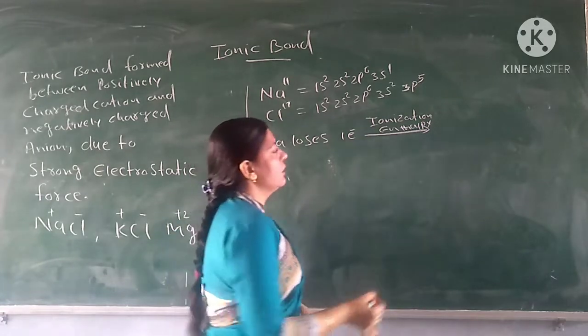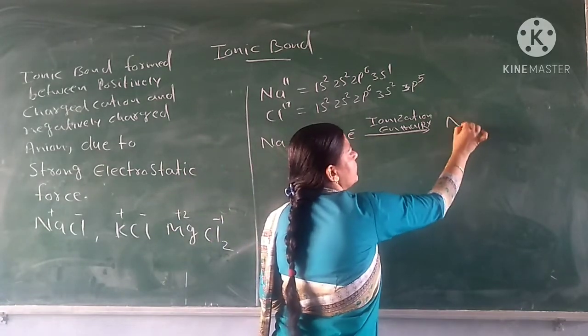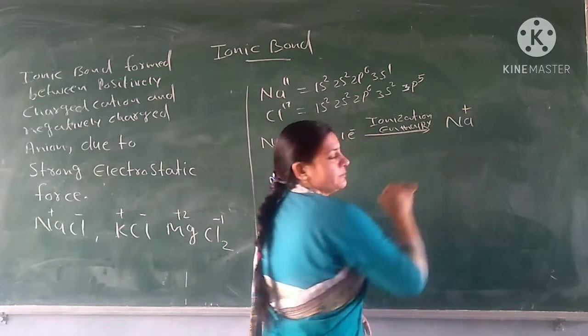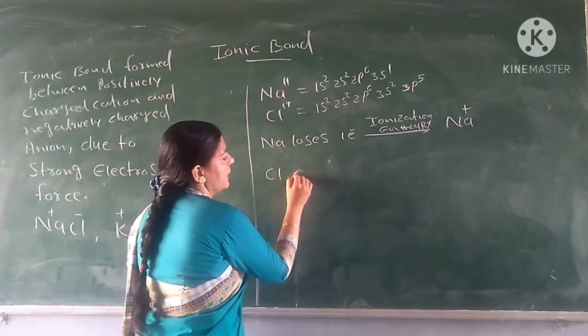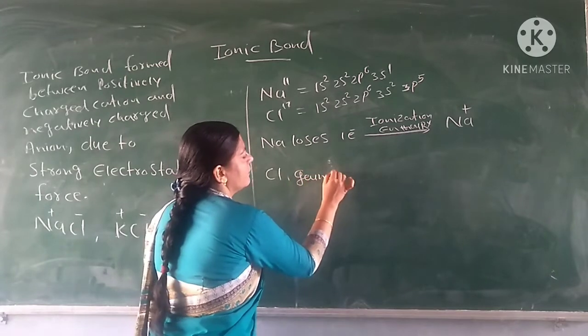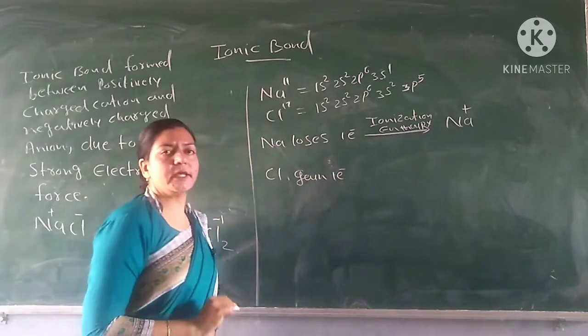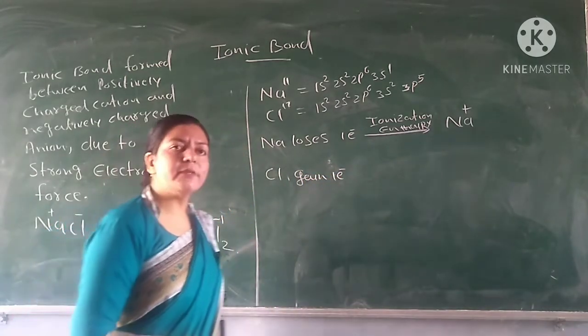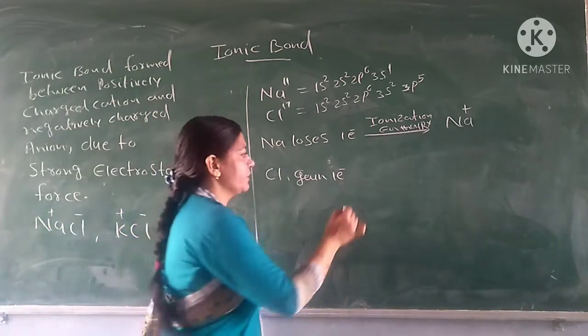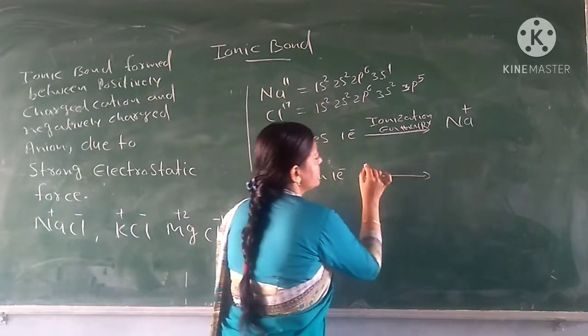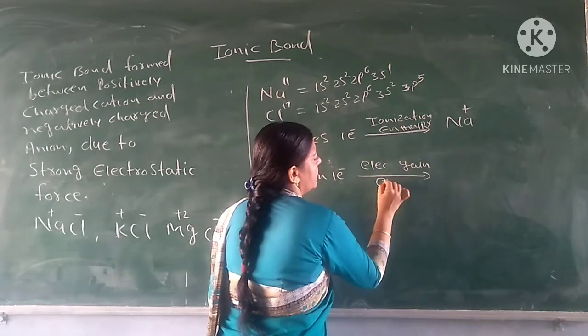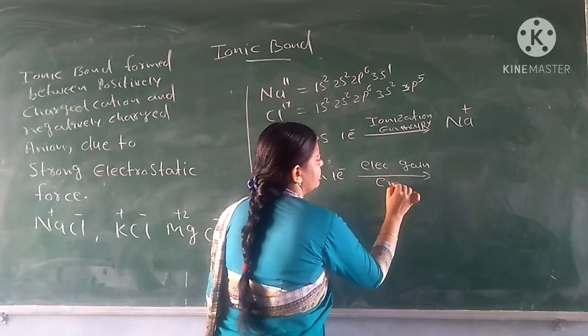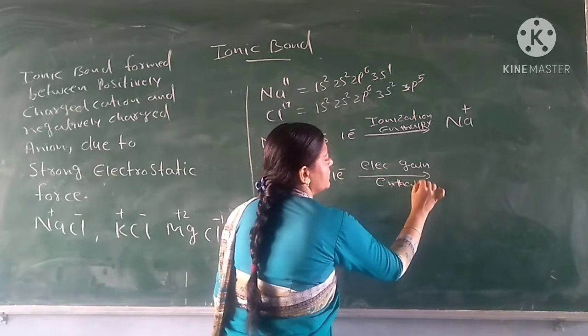When the electron is lost, sodium becomes positively charged. Then chlorine gains one electron. When an electron is gained, the energy involved is called electron gain enthalpy.